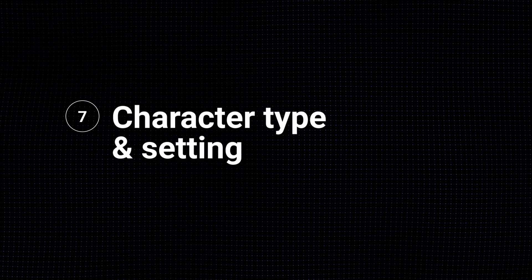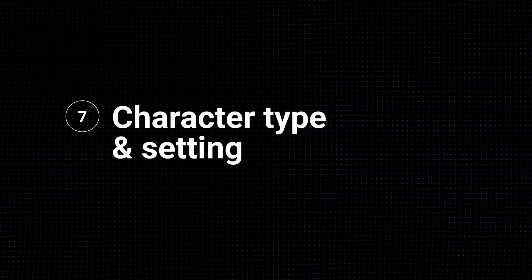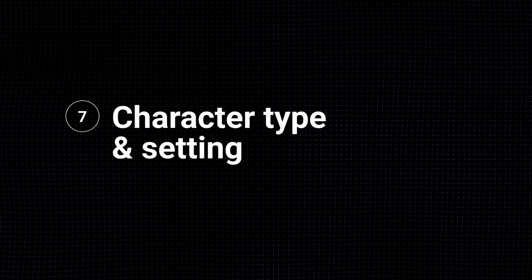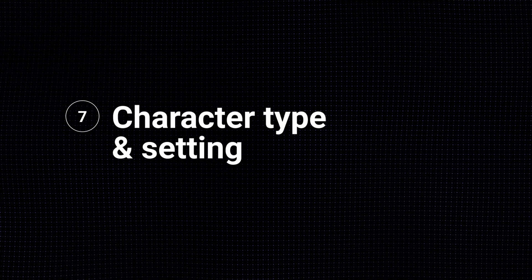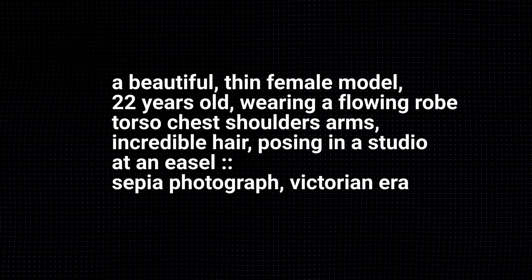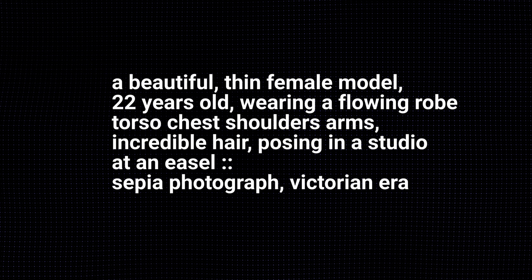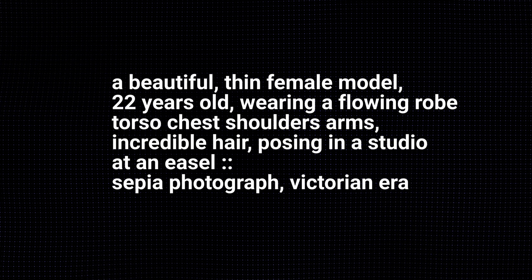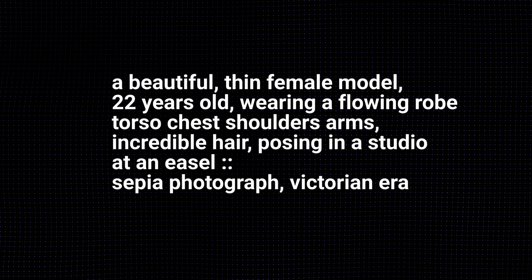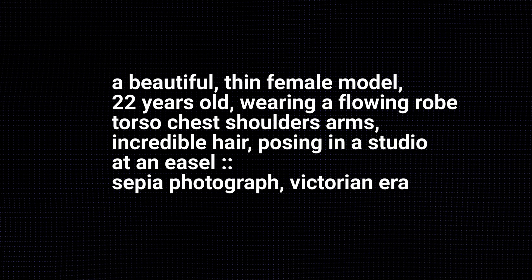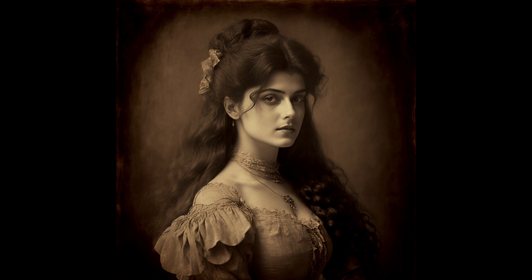Tip number seven: specify the type of character and setting. This modifier can impact clothing, pose, and all sorts of things. A beautiful thin female model, 22 years old, wearing a flowing robe, torso, chest, shoulders, arms, incredible hair, posing in a studio at an easel. Sepia photograph, Victorian era. Let's see what we get — a beautiful image.